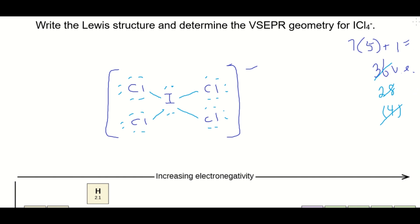Finally, let's take a look at the VSEPR geometry. The central atom is iodine. It has 1, 2, 3, 4, 5, 6 areas of electron density.